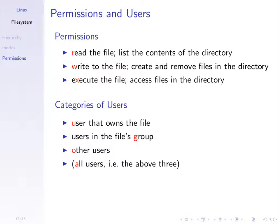Read permission on a directory means you can see the contents of that directory — see what's inside it. Write permission on a directory means you can create files in that directory or remove files from it. Execute permission on a directory means you can access the files in that directory. The same read, write, execute permissions are used, but they have a slightly different meaning for directories versus files.